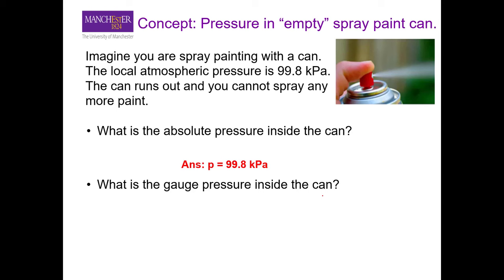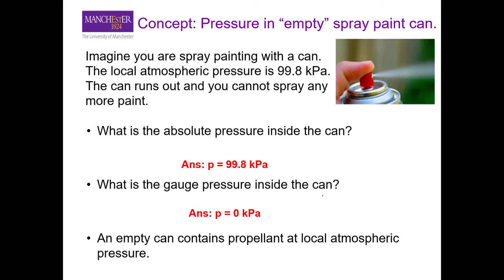Now, what is the gauge pressure inside the empty can? The answer is 0 kilopascal gauge pressure. This means there is no propellant remaining in the system, and the only pressure present is atmospheric pressure. That is why you cannot spray paint anymore — the pressure inside the can and outside the can are equal.